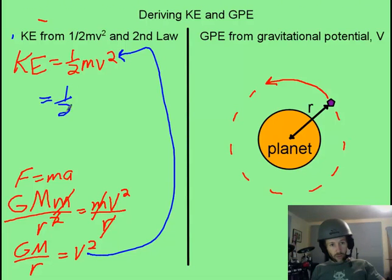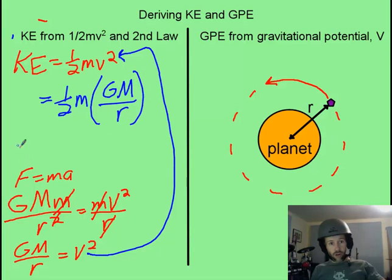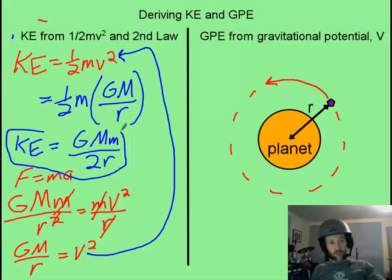Hopefully you got your ½m times GM over r, and then what our final answer is going to be is GMm over 2r, kinetic energy for an orbiting satellite at a particular height above the center of the planet.